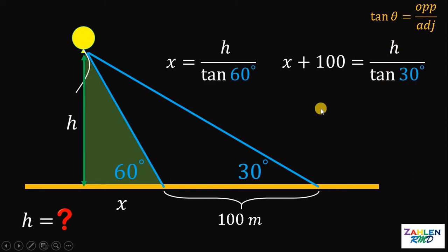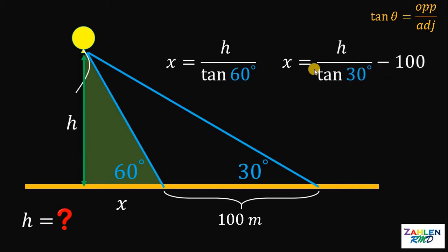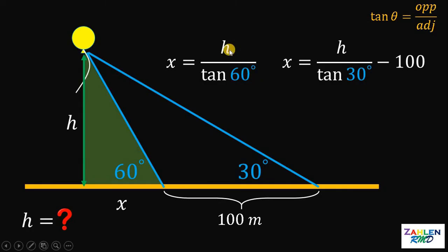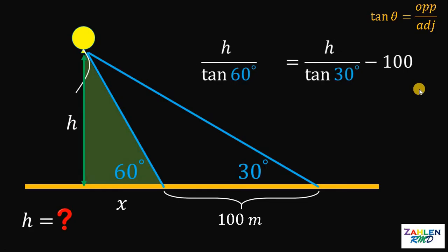Let's subtract 100 from both sides to get x: x = h/tan(30°) − 100. Now both expressions are equal to x, therefore h/tan(60°) = h/tan(30°) − 100.